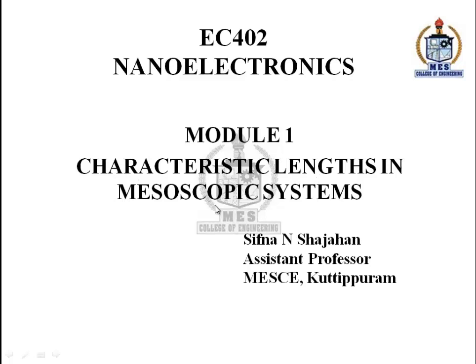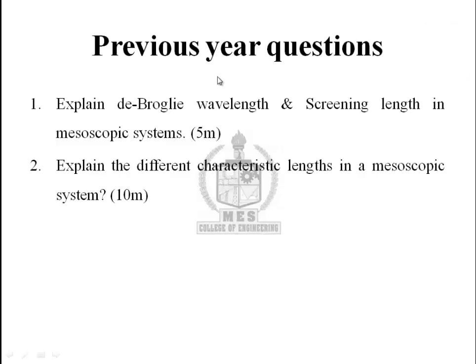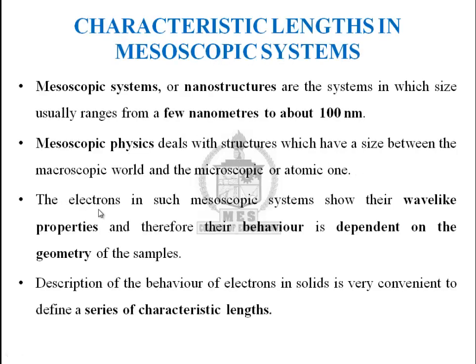Characteristic lengths in mesoscopic systems. Previous year questions based on these topics are: explain de Broglie wavelength and screening length in mesoscopic systems, and explain the different characteristic lengths in a mesoscopic system. A system in which size ranges from a few nanometers to about 100 nanometers comes under a mesoscopic system. Mesoscopic physics studies nanometer-scale structures.